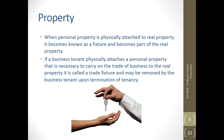When property is physically attached to real property, it becomes known as a fixture and becomes part of the real property. If a business tenant physically attaches personal property that is necessary to carry on the trade or business to the real property they're using, it becomes a trade fixture. Those may be removed by the business tenant upon termination of the tenancy.